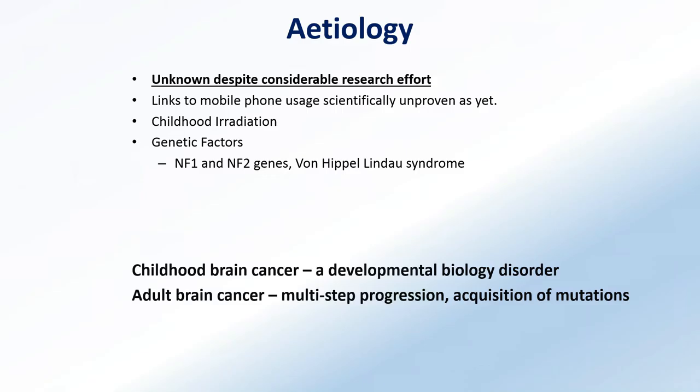At the moment, the etiology - why do brain cancers arise? - is something extremely difficult, even from a scientific perspective, to address. When we get samples from patients' brains, it's already a very late stage disease, so we have to begin our scientific hypotheses on a very malignant disease. What we do know from decades of research is that childhood brain cancer and adult brain cancer probably do differ in how they arise. The evidence indicates that in a child's brain, which is still developing, it is regarded as a developmental biology disorder, where the tumor doesn't need an awful lot of mutations because some of those changes are already in place.